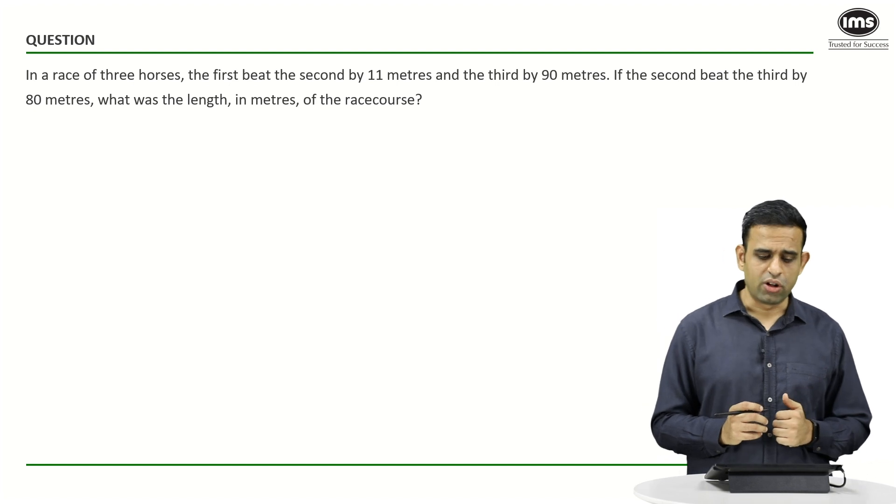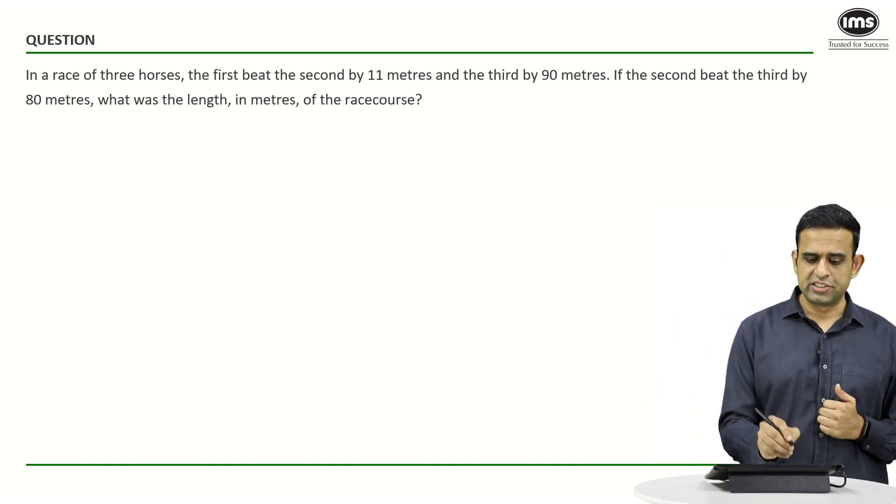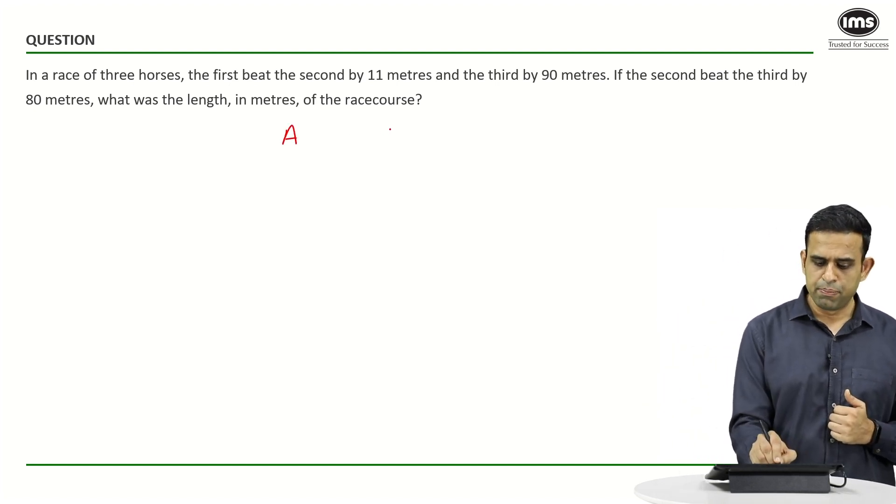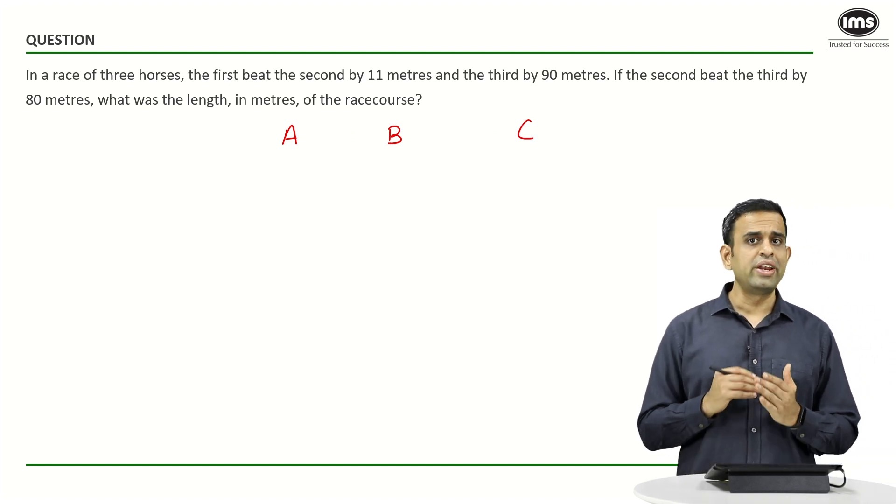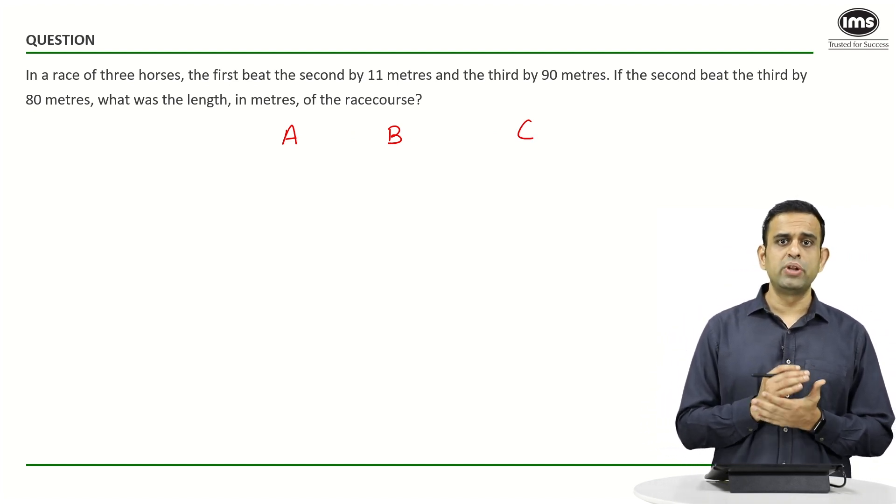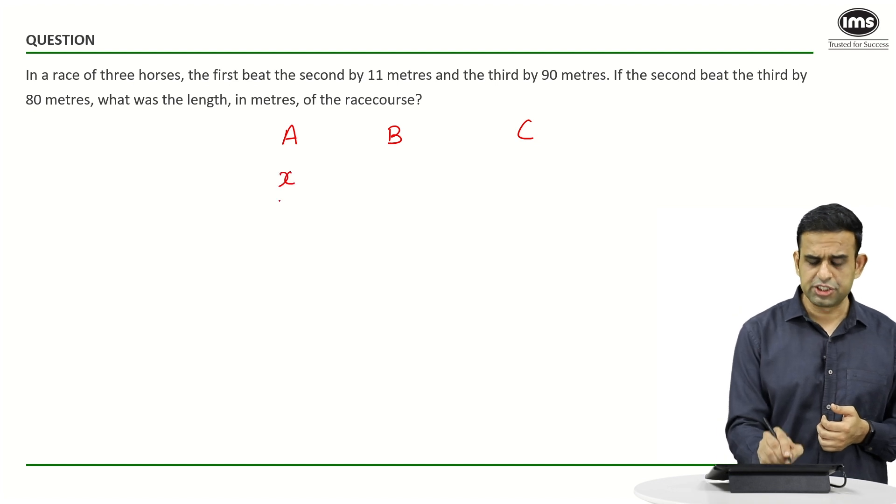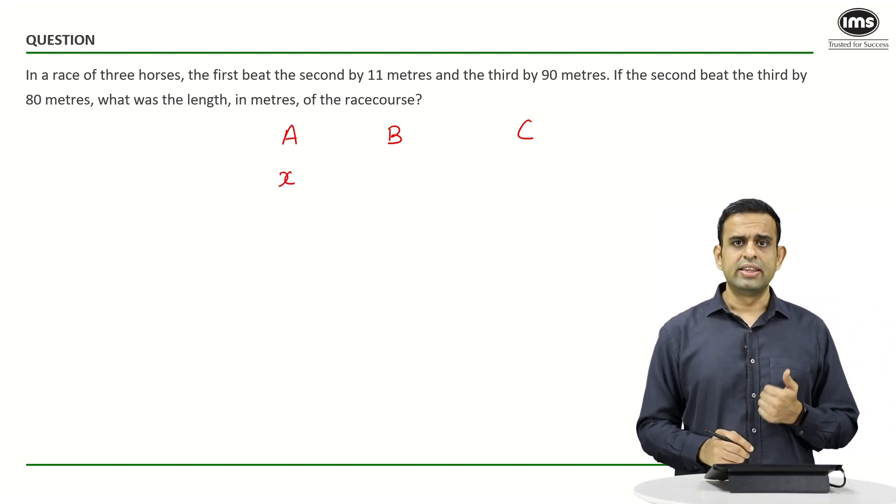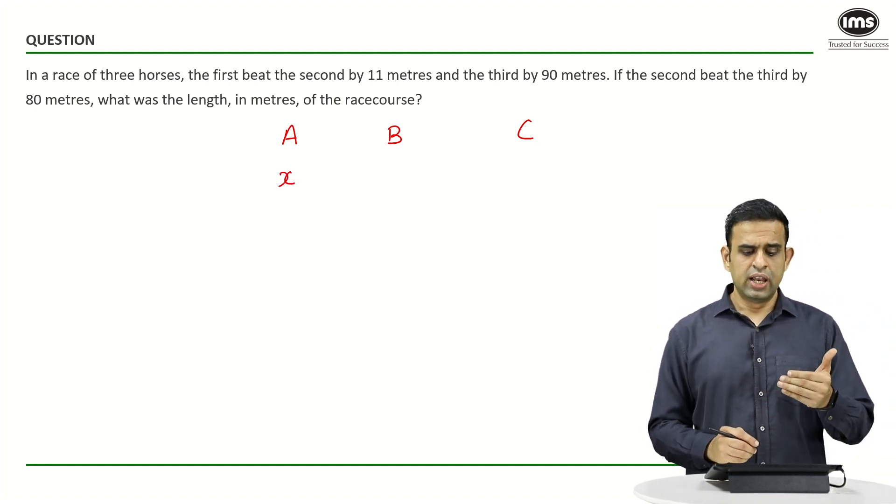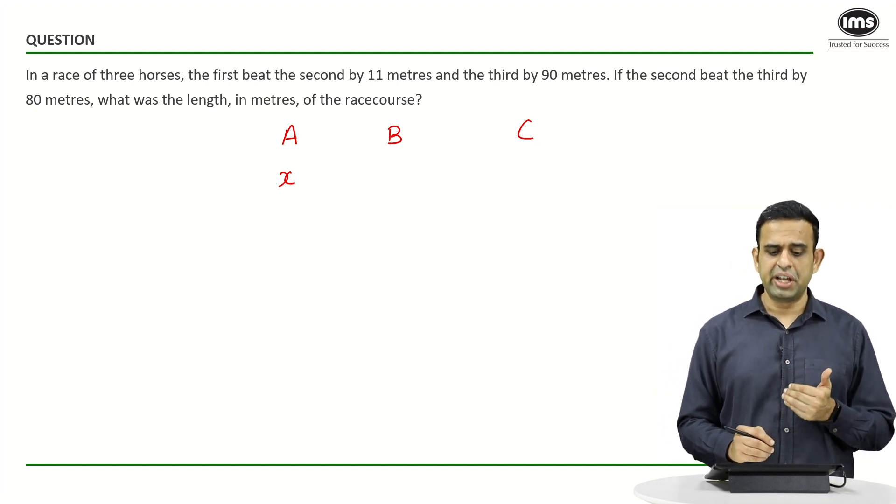Suppose if I look at one of the methods to solve this question: if I say A is the first horse, B is the second, C being the third one. When A completes the race, let me assume that X denotes the length of the race. The moment A finishes the race, B is 11 meters behind the finishing line.